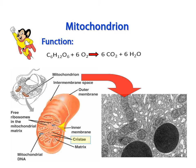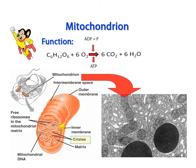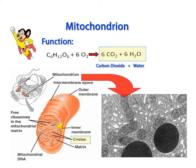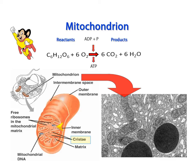Cellular respiration uses oxygen and glucose to make the energy molecule called ATP, which fuels all cellular activity. Carbon dioxide and water are waste products also produced by this reaction. When you think about this organelle, think about the reactants and the products of this chemical reaction.